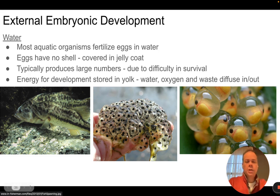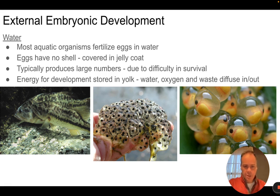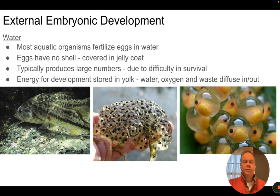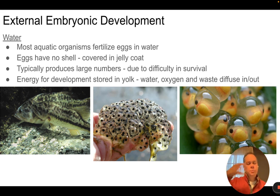Amphibians also have external fertilization — sperm cells meet egg cells outside in the water. The eggs of these organisms don't have a shell; they need to allow sperm to enter and fertilize them. Frog eggs, for example, are in a jelly-like mass that keeps them in one place for easier fertilization. These organisms often produce very large numbers of eggs — fish can produce tens of thousands during one spawning event and amphibians can produce hundreds — because many may not be fertilized, may not survive, or may be eaten.